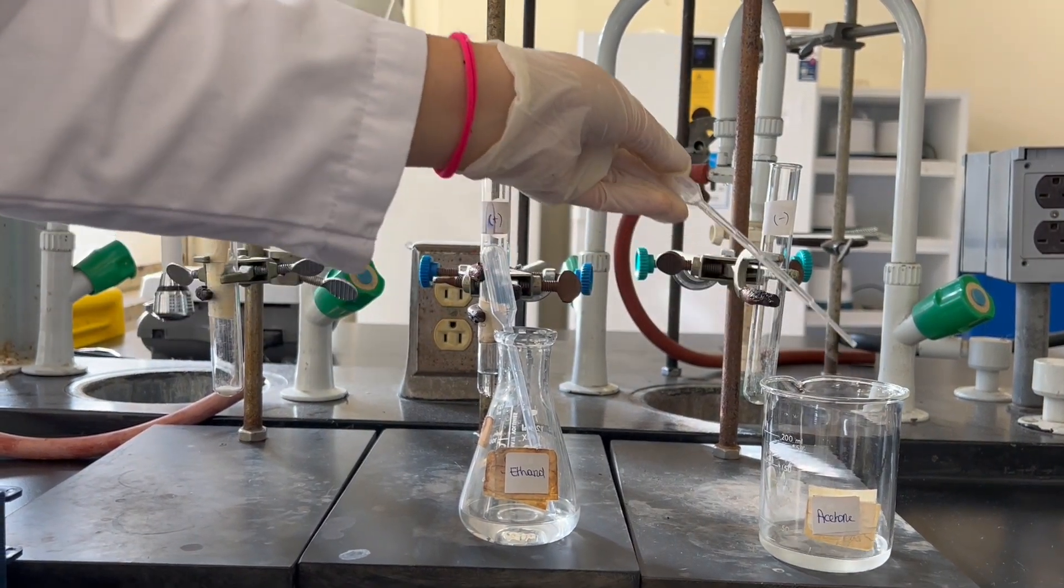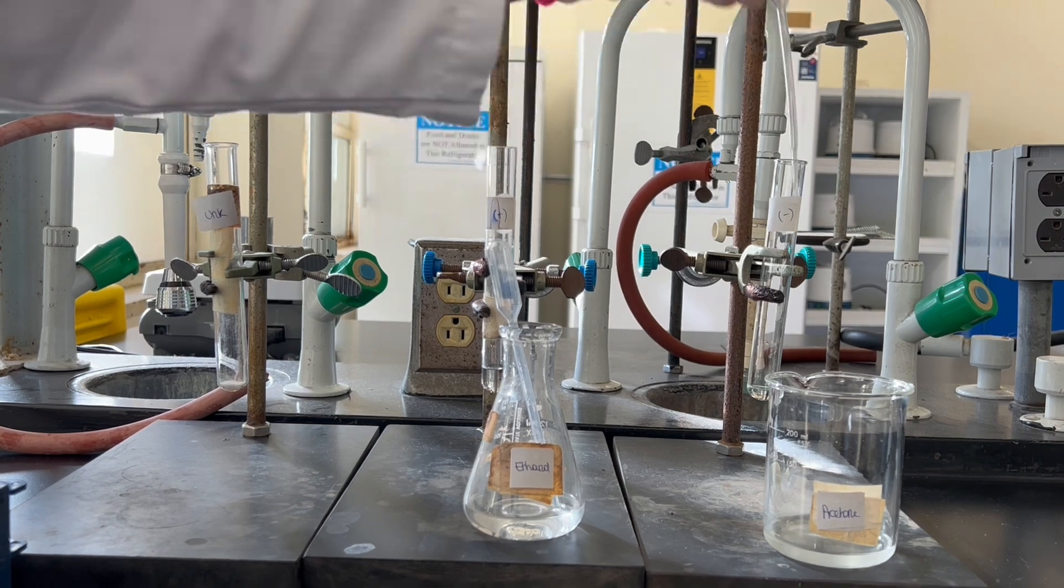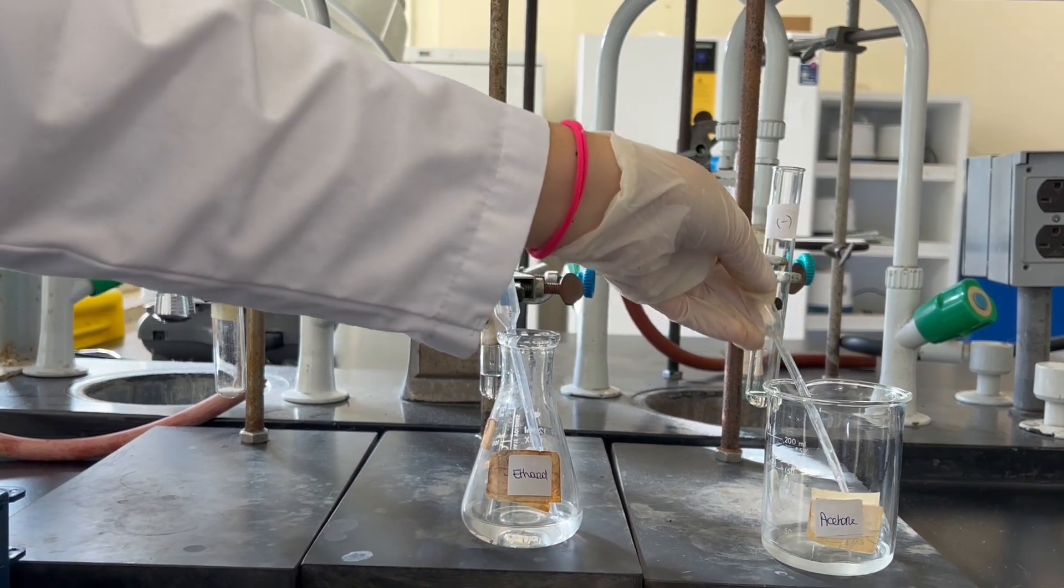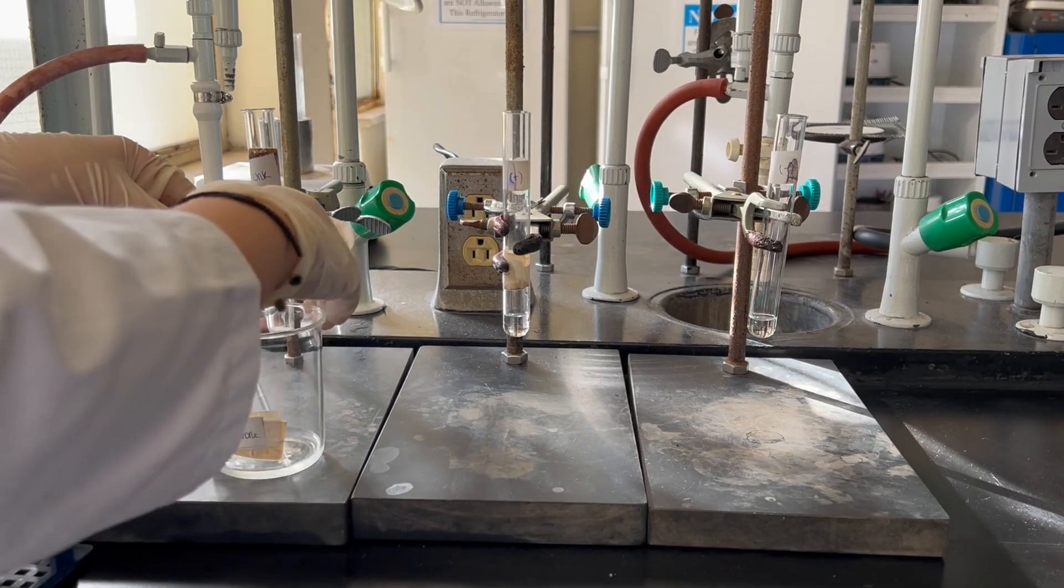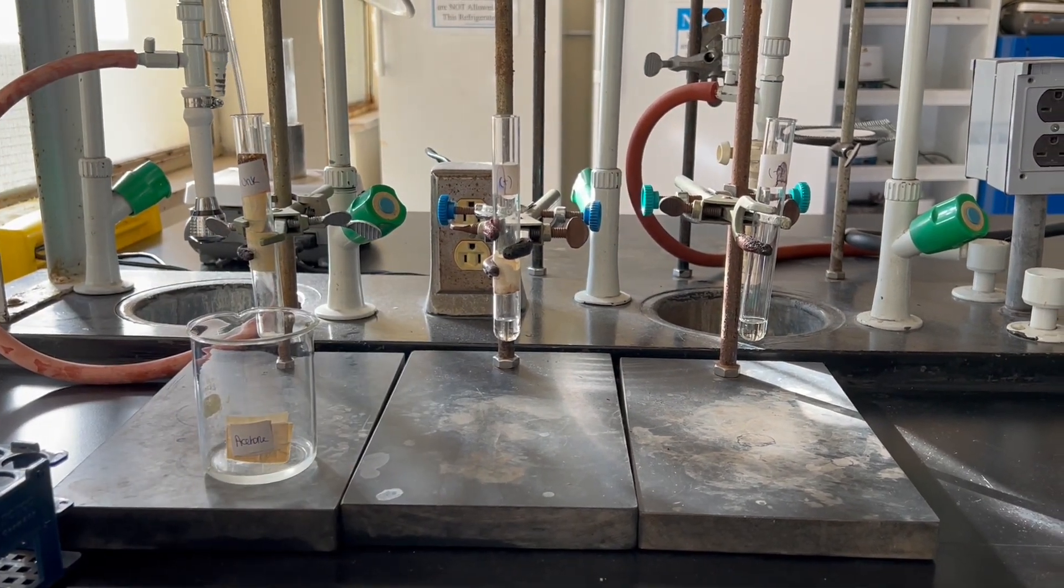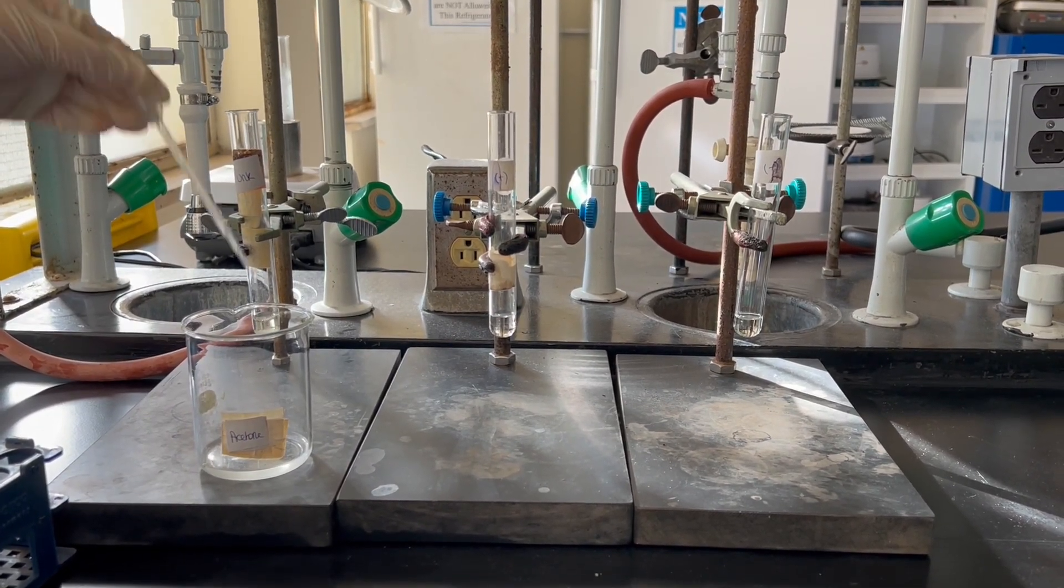Acetone will be used as a negative control since it is a ketone and gives a negative test. Since our unknown is a solid, we need to add a few milliliters of acetone to dissolve it.